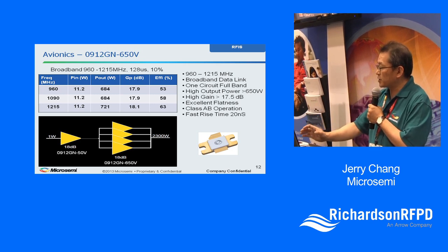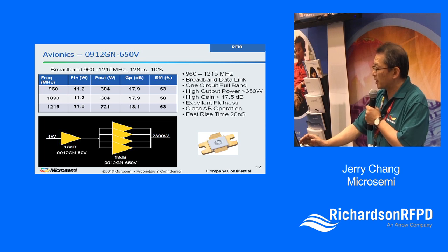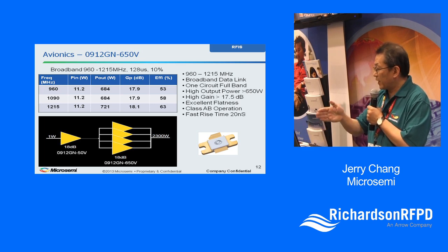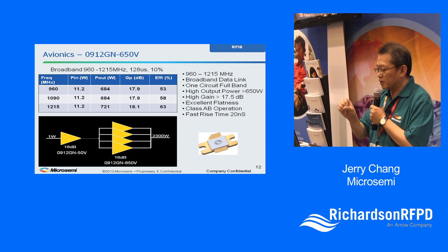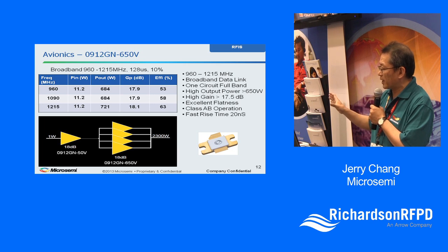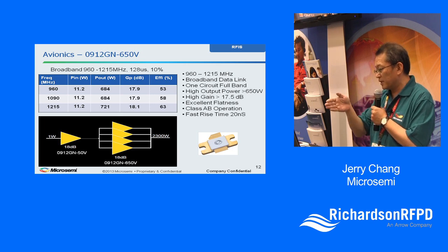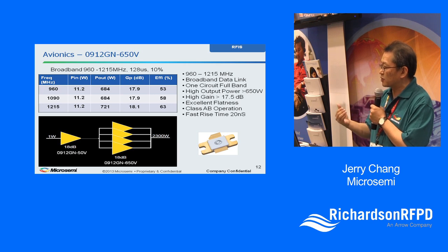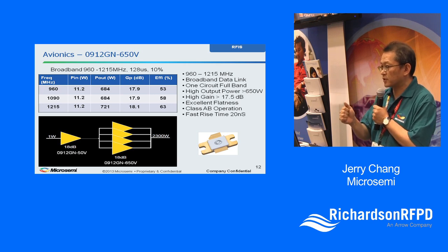This device also features very fast rise time and excellent power flatness. While some LDMOS or competitor devices show over 1–1.5 dB flatness across such a broadband, this GaN device achieves only 0.2–0.3 dB flatness — extremely flat and well-suited for broadband matching.